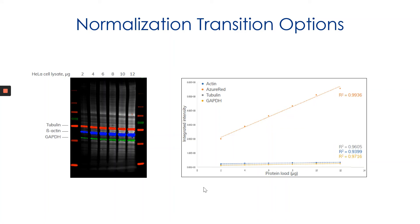For researchers that don't want to transition to fluorescence but still want to update their normalization method, Azure offers a total protein stain called Azure Red. The image on the left shows a blot labeled with three commonly used housekeeping proteins as well as Azure Red, with the intensities of each plotted on the right. With housekeeping proteins, there is very little signal intensity overall, as signal is generated from only one protein. Azure Red, by contrast, shows considerably more signal intensity because it captures the intensity of the entire lane. This generates more data points for comparison and normalization, and the linearity of Azure Red exceeds that of housekeeping proteins.